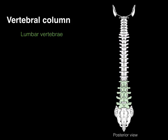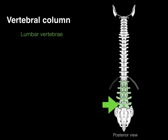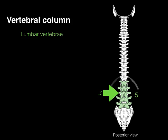The lumbar vertebrae are located in the lower back. They're found by identifying the first vertebra below the last articulating rib, continuing down to where the sacrum begins. There are five lumbar vertebrae: L1, L2, L3, L4, and L5.